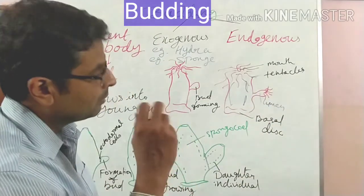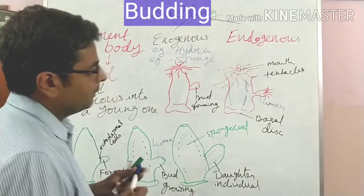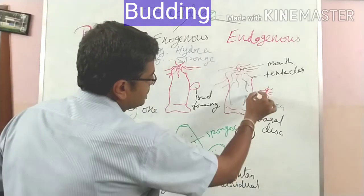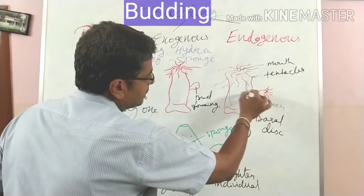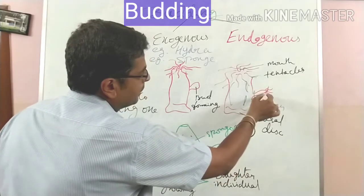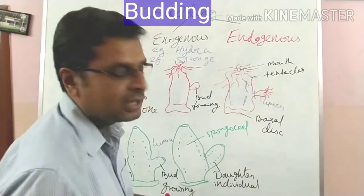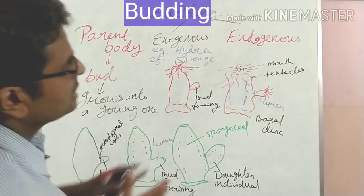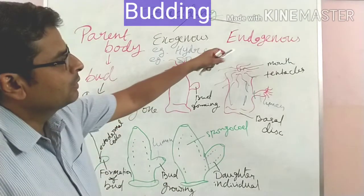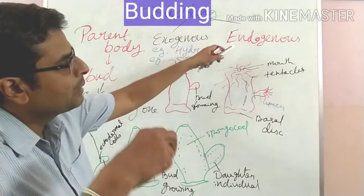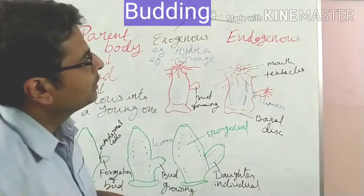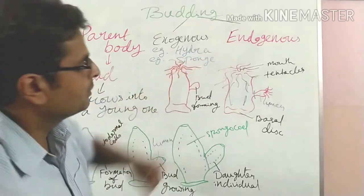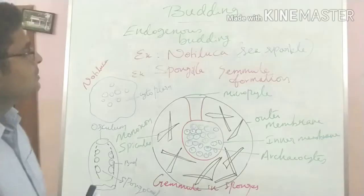Sometimes the bud develops tentacles with one mouth surrounded by tentacles. After constriction at its base, it detaches from the parent body and leads into individual life. This is exogenous budding. In endogenous budding, the formation of bud occurs inside the parent body.